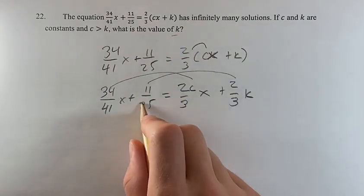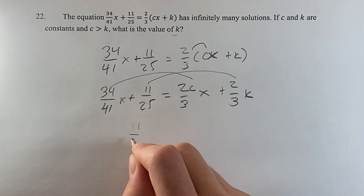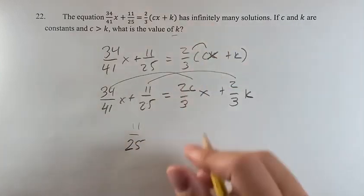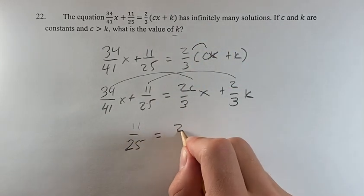We're solving for k, so we're going to look at the constant terms. We're going to see that if there's going to have infinitely many solutions, 11 over 25 is going to have to equal two-thirds k.